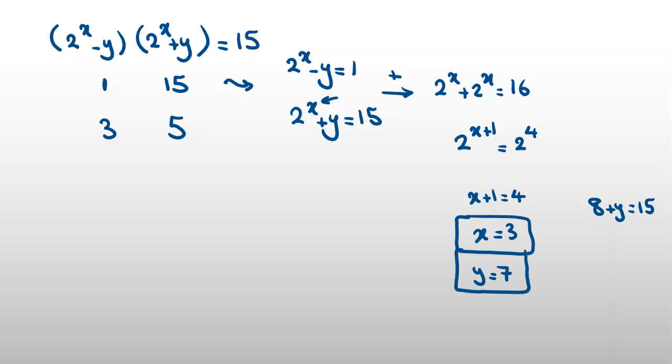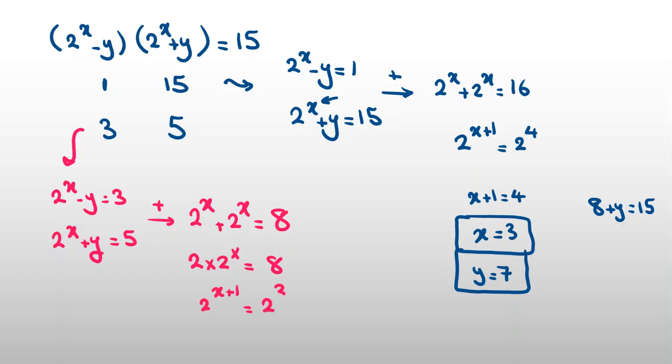Now, let's check the second case. Second case is 2^x - y = 3 and 2^x + y = 5. If we add up these two equations again, 2^x + 2^x = 3 + 5 = 8. So 2·2^x = 8, which means 2^(x+1) = 8 = 2^3. So x + 1 = 3, and we can conclude x is 2.